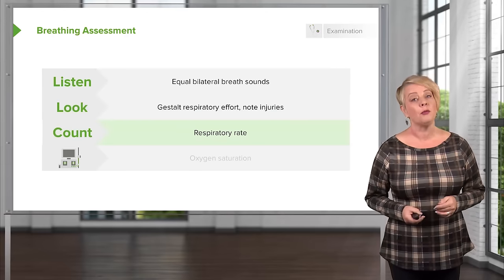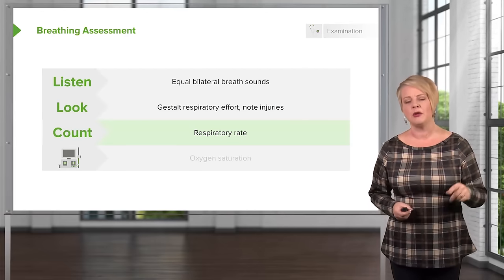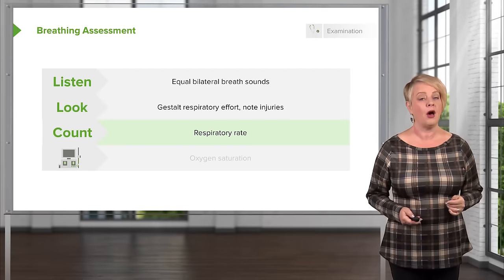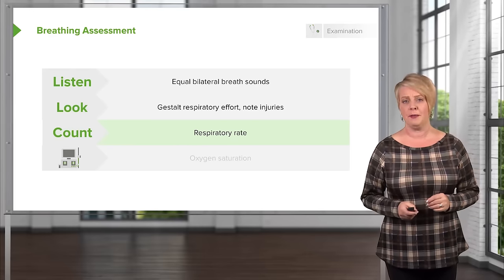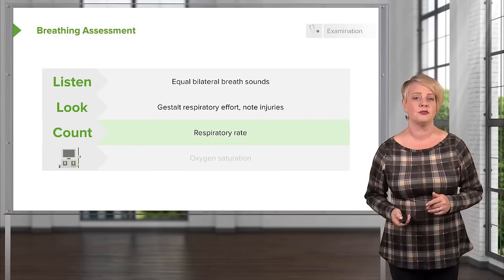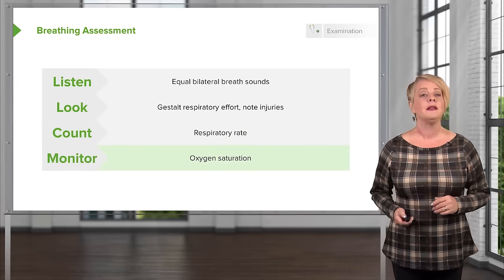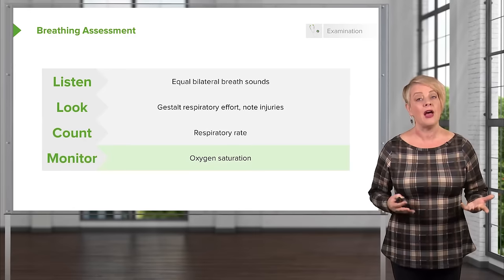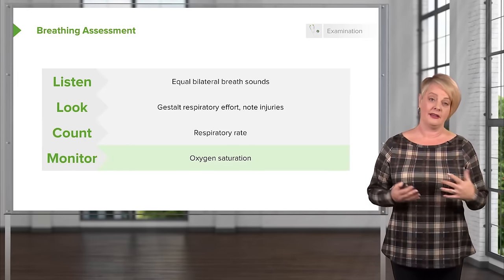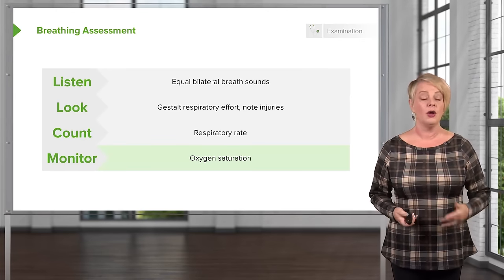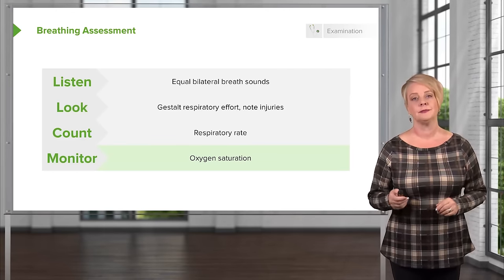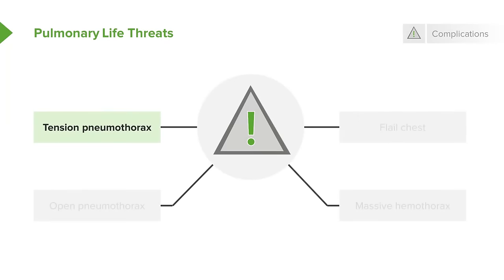You want to count the respiratory rate — this is a vital sign that is often documented incorrectly, so double-check it yourself. Be concerned about a patient with significant tachypnea because they could tire out quickly. Your respiratory vital signs also include oxygen saturation. The whole purpose of the lungs is to get oxygen into the blood, so you need to know if they are fulfilling that purpose effectively.